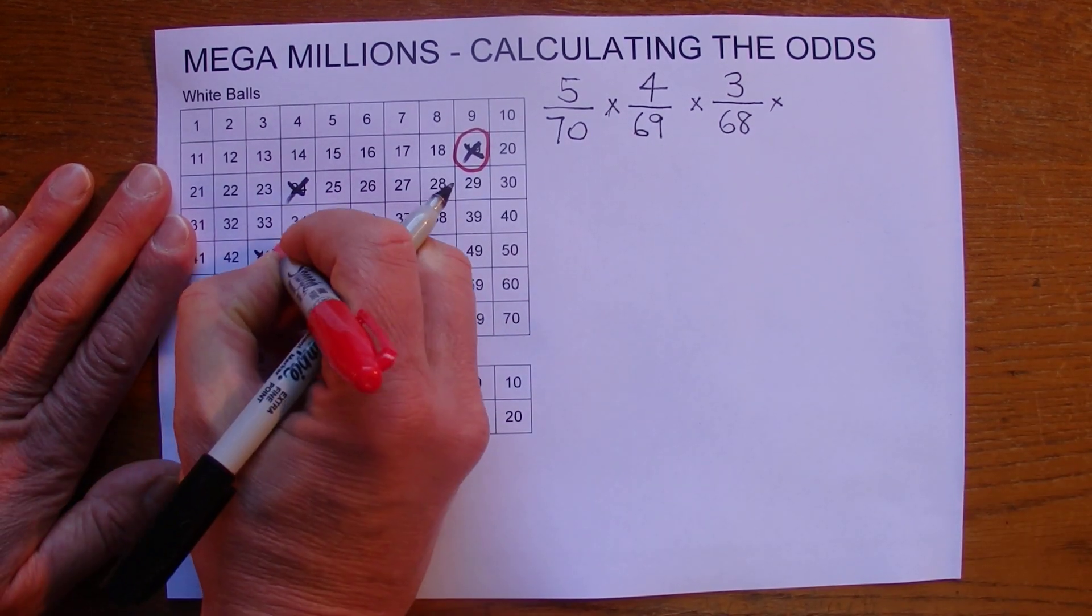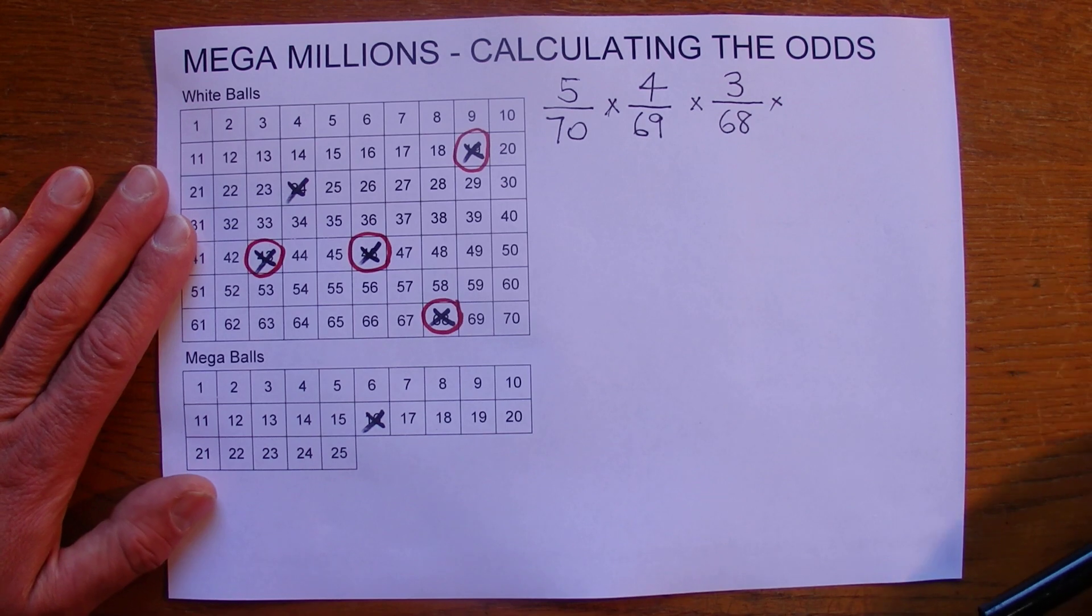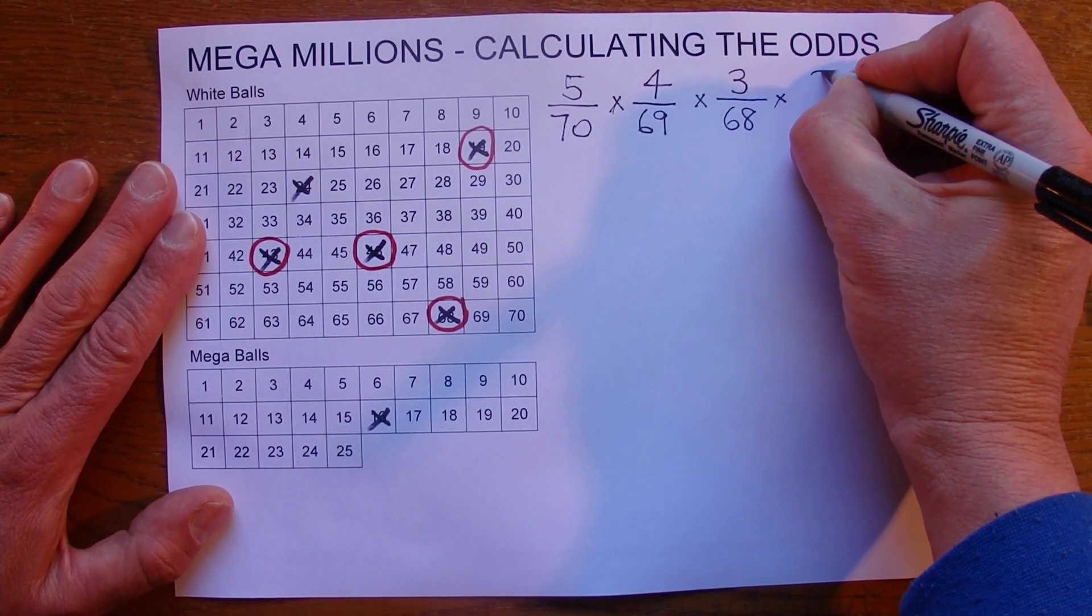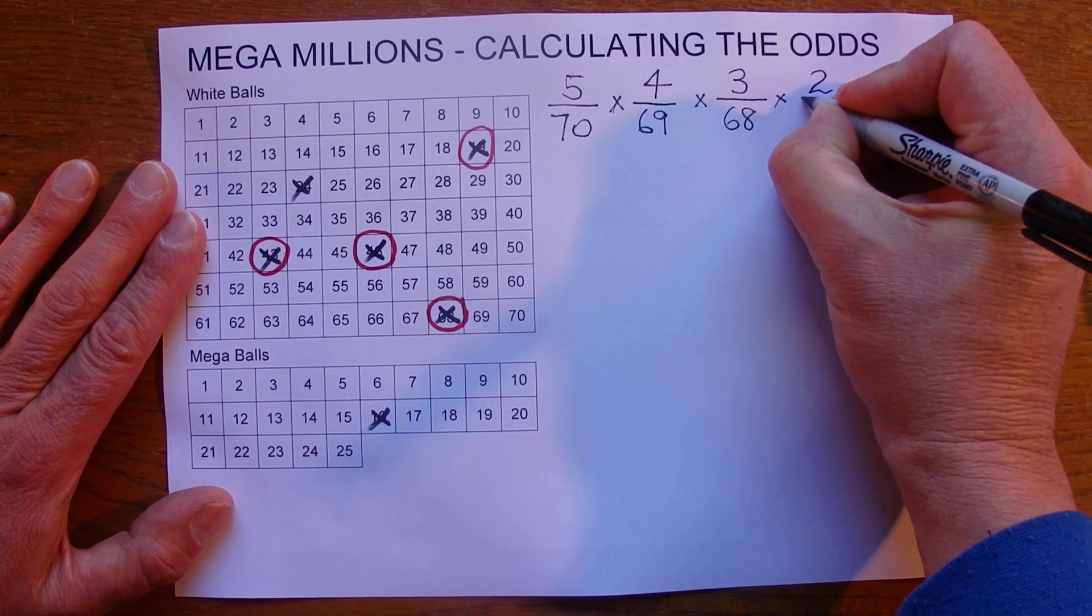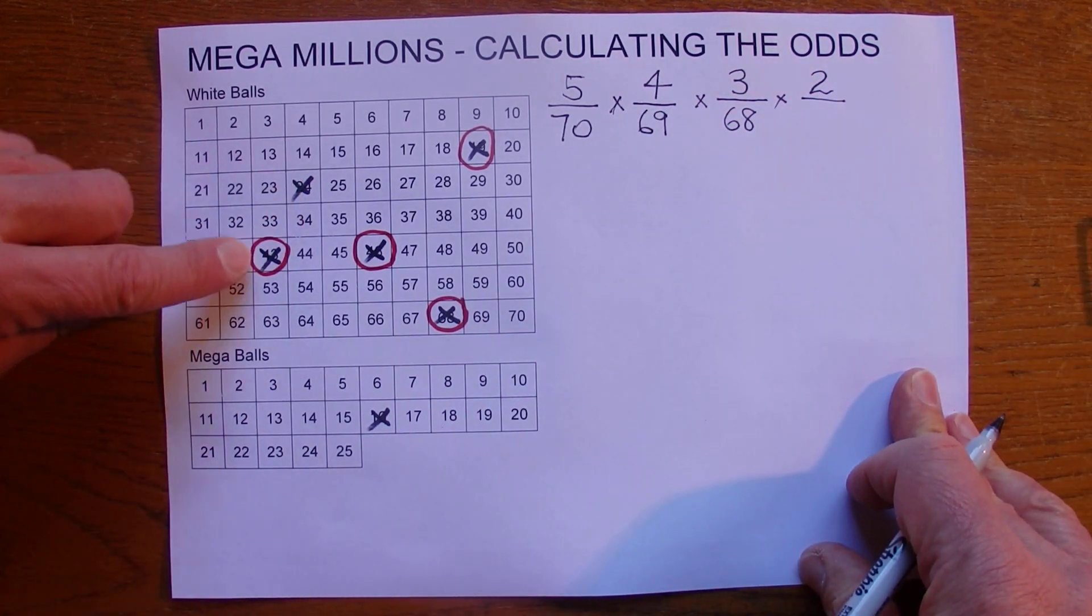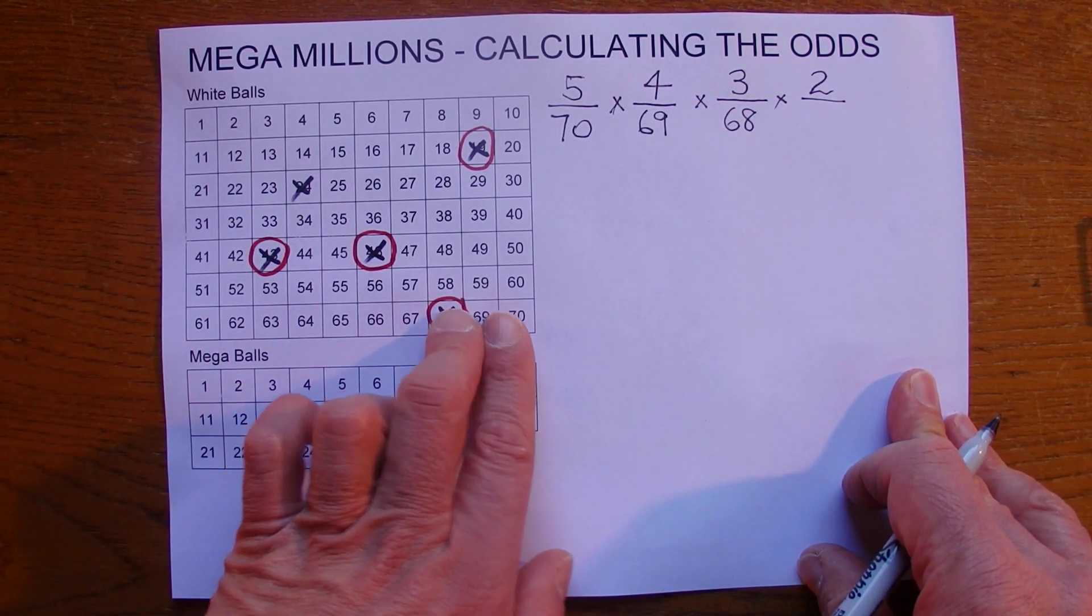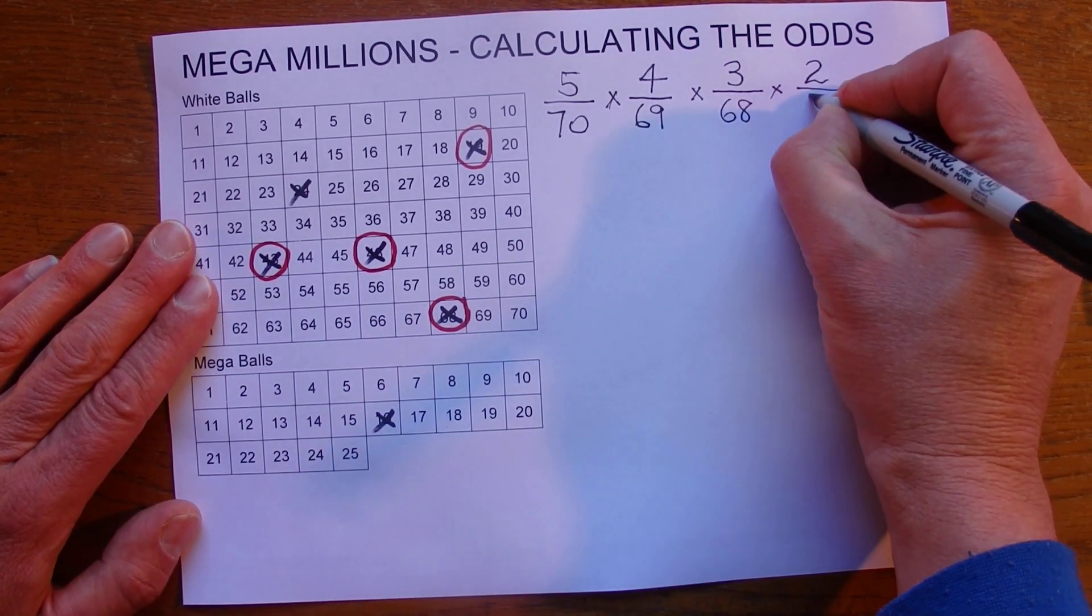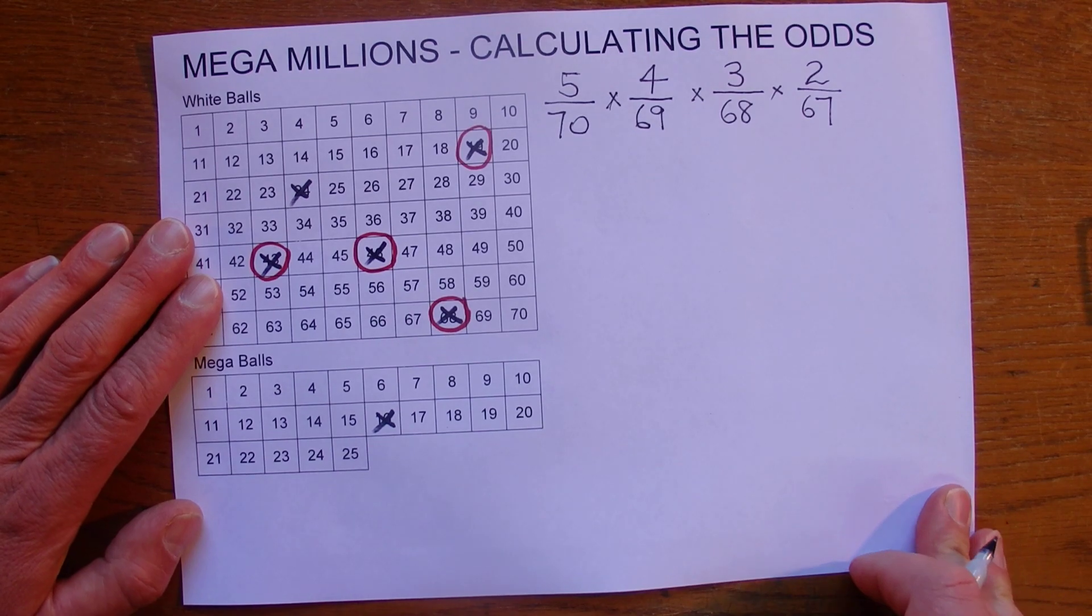And the fourth ball, you match the fourth ball as well and this time you've only got two chances. There's only two numbers that aren't marked on your card. So you've got two chances and this time there's only 67 balls left in the barrel because three have already been drawn.